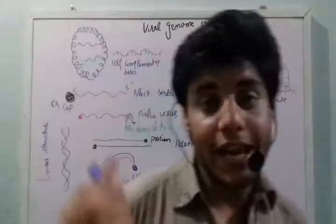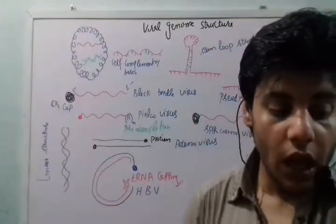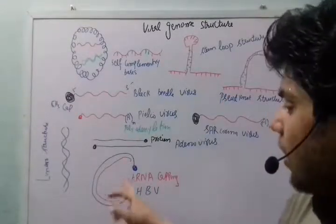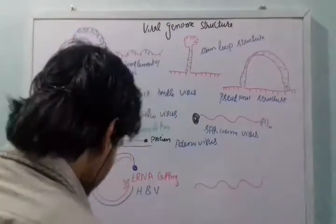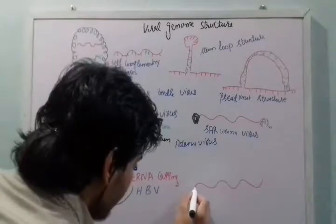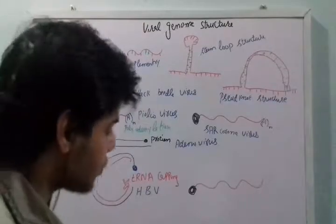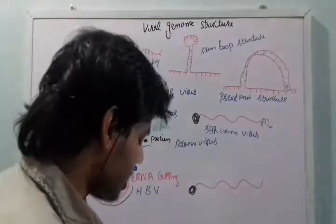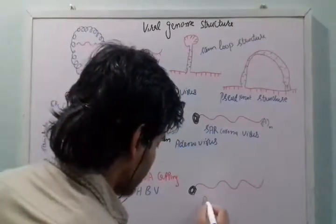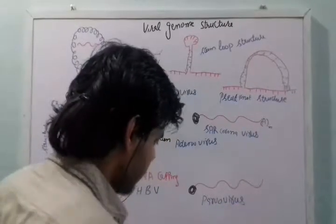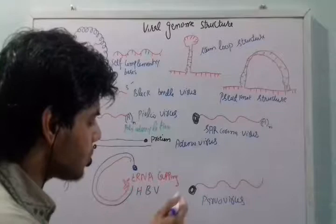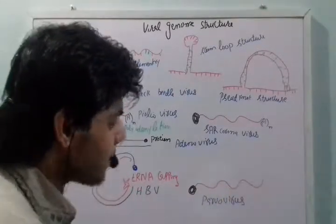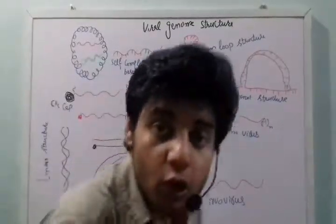There is another DNA structure — a single-stranded DNA where there is a protein at only one terminal end. The strand has protein at just one end, and the rest is a single-stranded DNA. This kind of structure is usually present in parvovirus.